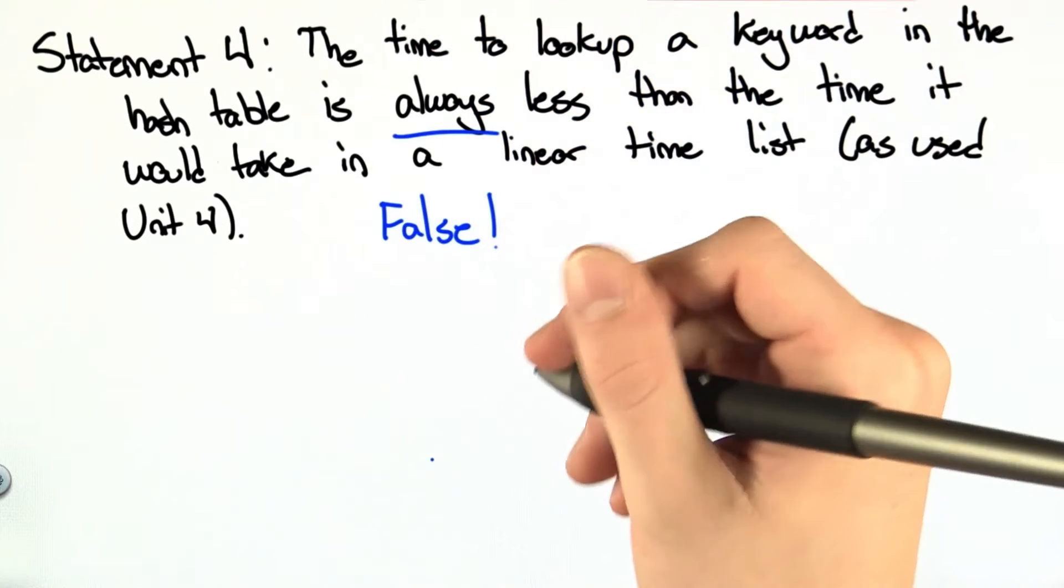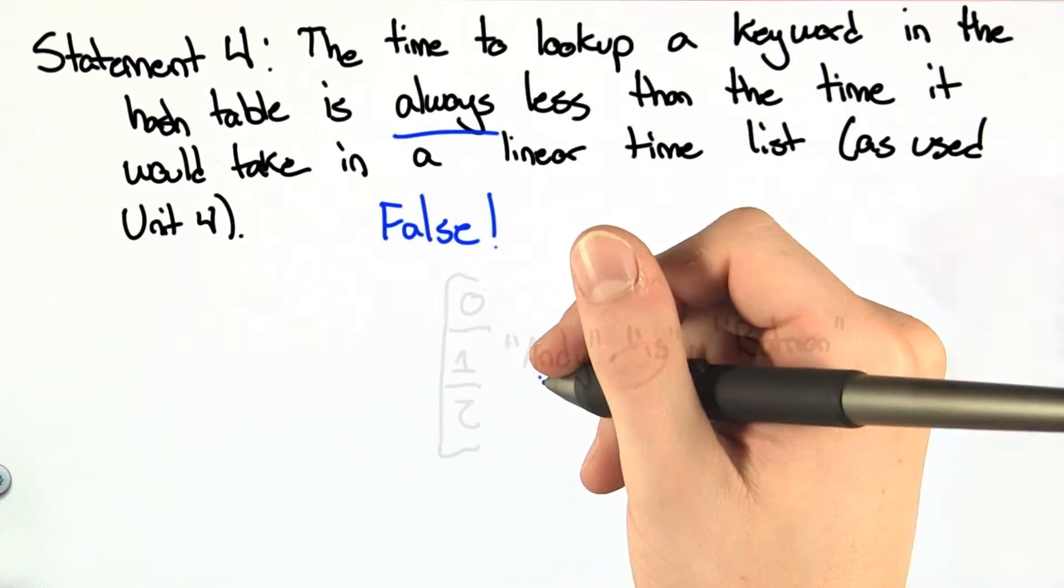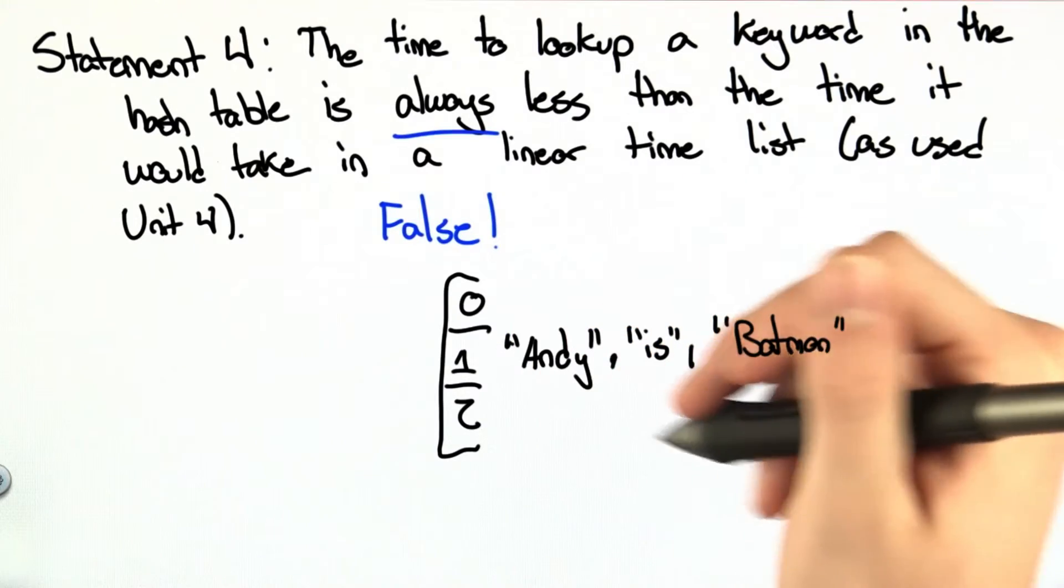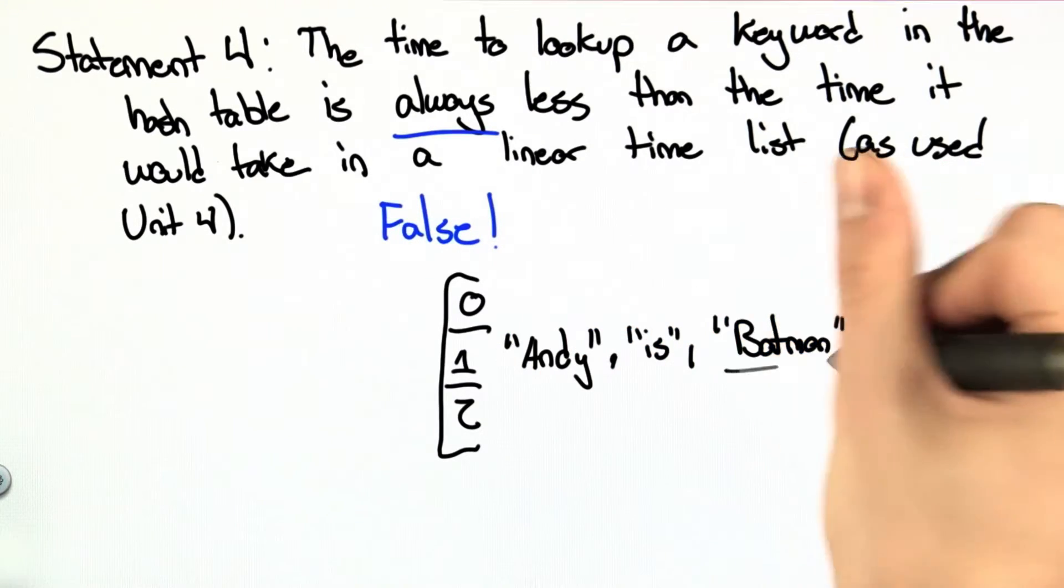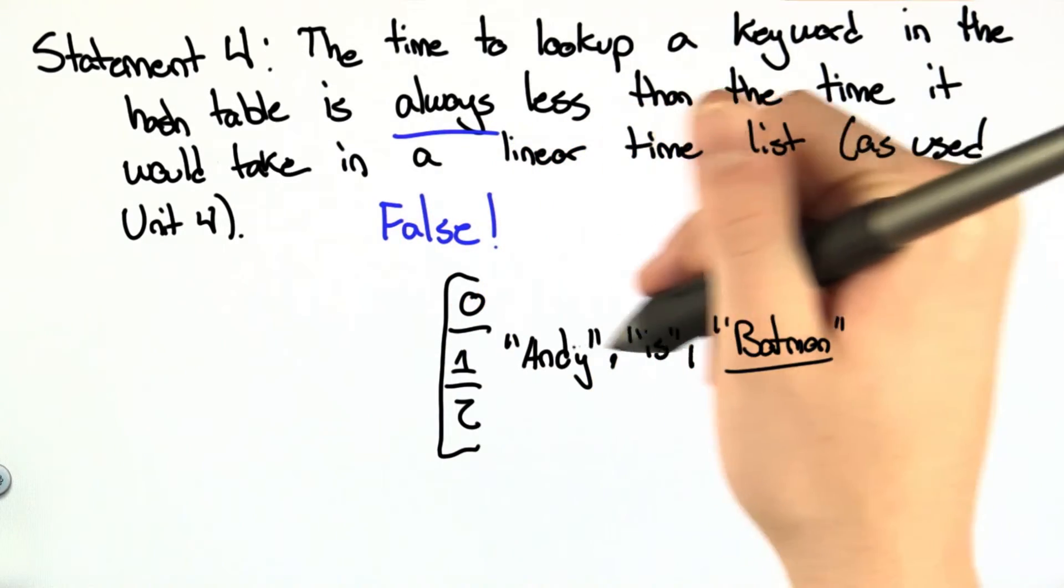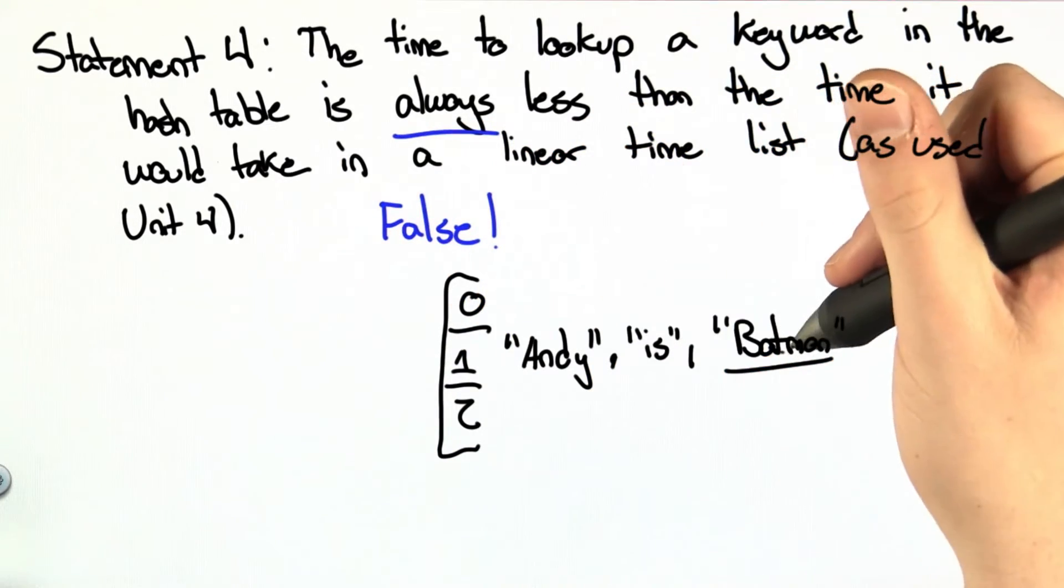And we're going to show that by giving an example hash table. So if I have a hash table with three keywords, I'll go in bucket one. If I want to lookup the keyword Batman, I'm going to go to bucket one and iterate through each item in this bucket until I find Batman.